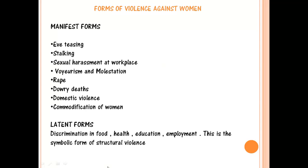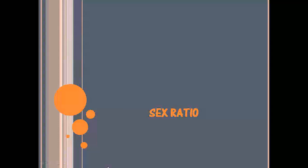You can read the Justice Verma Committee's report, as these are very important things. Whenever there is a question revolving around violence against women, it is always better to have a structured answer — the examiner will know you have a clear view, with manifest and latent forms identified. The latent form is basically discrimination in food, health, education, and employment. This is a symbolic form of structural violence — it is actually a form of structural violence against women that further subordinates their position and hampers their growth.